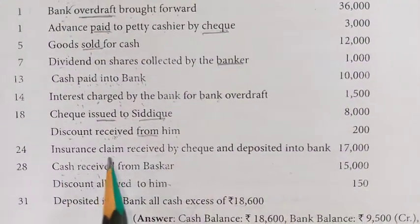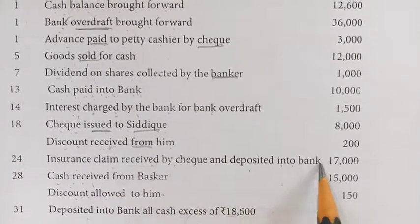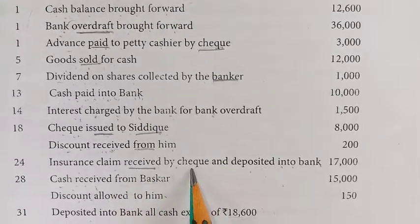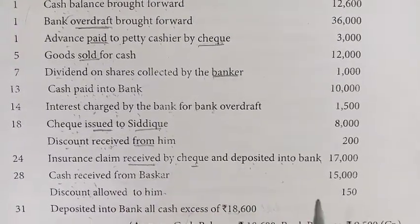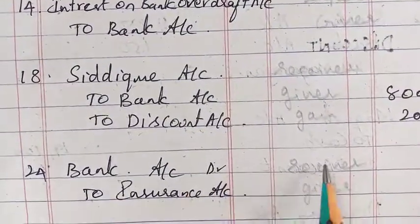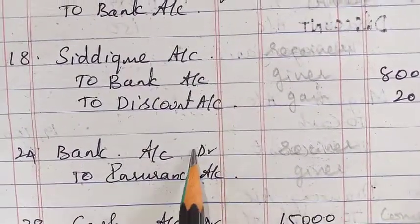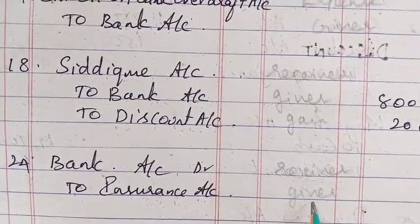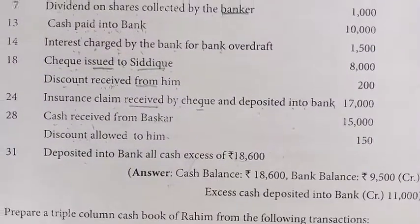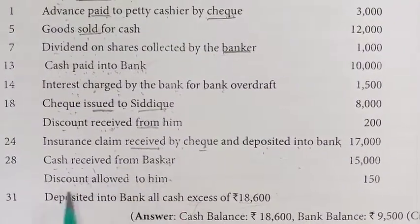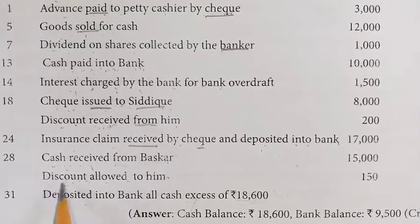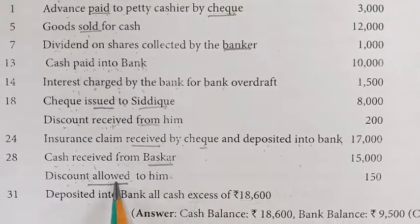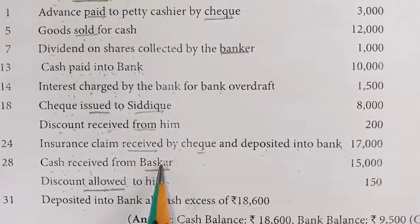Next, 24th: insurance claim received by check and deposited into the bank. Journal entry: bank account debit — bank is the receiver; insurance is the giver. Next, 28th: cash received from Baska with discount allowed to him — discount allowed is a loss to us, so Baska is the giver.